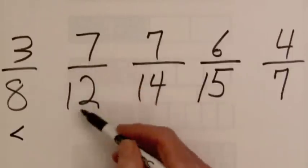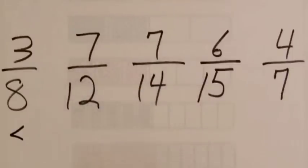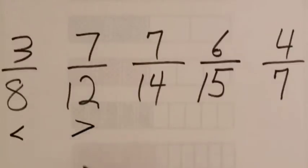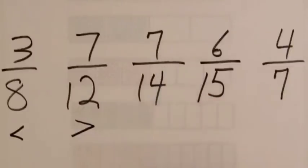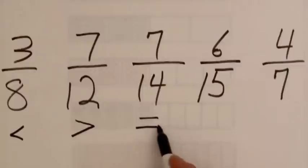For seven twelfths, the bar for this fraction has twelve parts, and seven parts are shaded. So it's greater than half shaded, and this fraction is greater than half. The bar for seven fourteenths has fourteen parts, and seven are shaded, so this fraction is equal to one half.